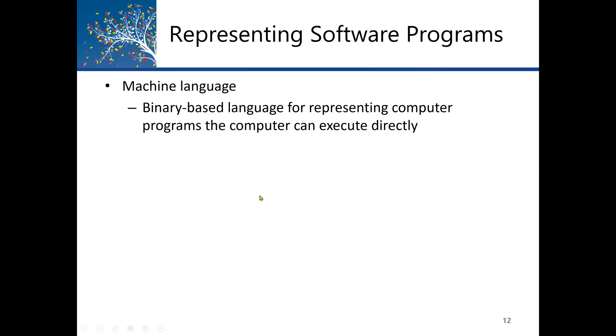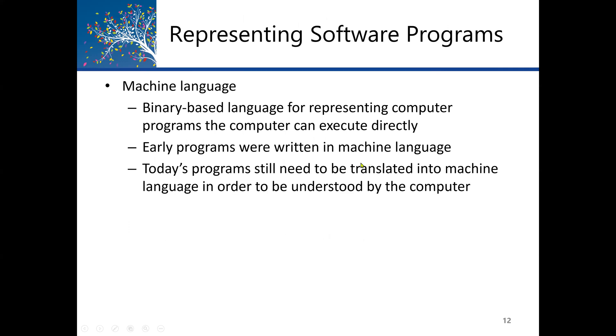Machine language is the binary-based language for representing computer programs. The computer can execute directly. Machine language consists of zeros and ones. The computer understands it. Earlier programs were written in machine language. Today's programs are written in any language, for example Java or Python, which look like English language. But we have special software that will translate it into machine language in order for the computer to understand it.